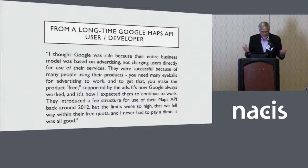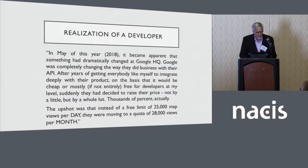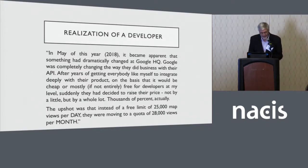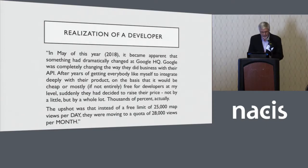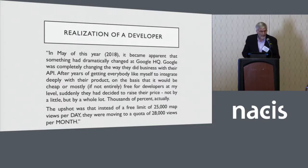In May 2018, it became apparent something had dramatically changed. Google was completely changing the way they did business with their API — after years of getting developers to integrate deeply with their product on the basis that it would be cheap or mostly free. Google Maps suddenly raised their price not by a little, but by thousands of percent. Instead of a free limit of 20,000 maps a day, they moved to a quota of 28,000 views per month.